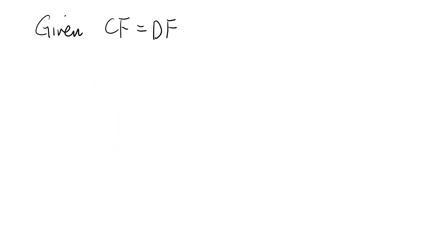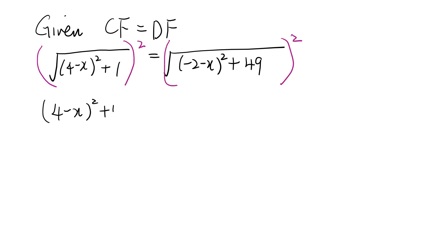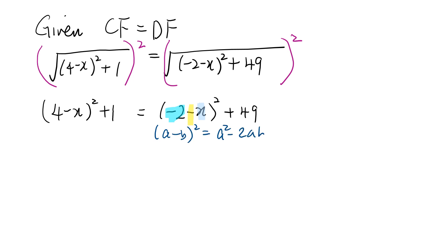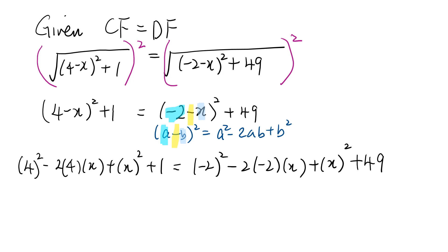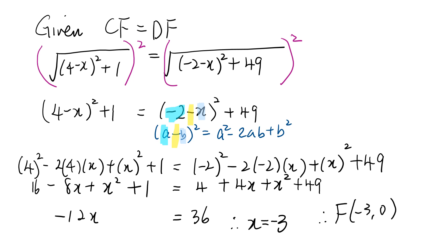Since CF = DF, set the two expressions equal and square both sides to remove the radical sign. Be very careful expanding (−2 − x)² using the algebraic identity. After careful algebraic manipulation, you get −12x = 36, so x = −3. Therefore point F is (−3, 0), which lies on the left side of the y-axis.